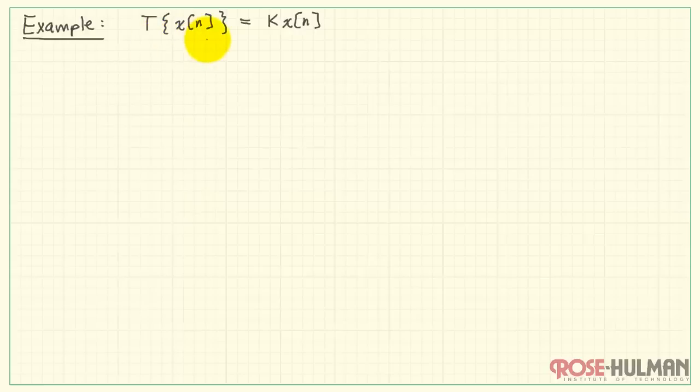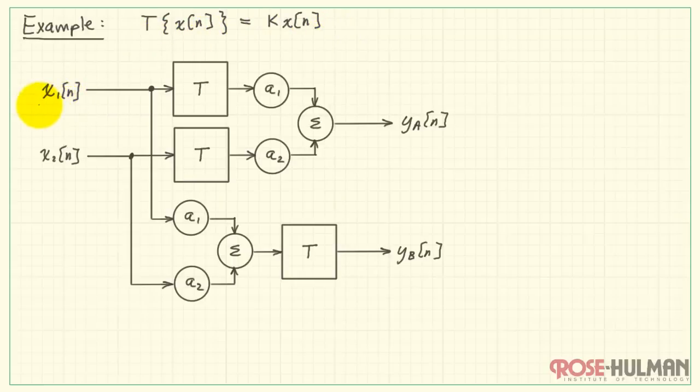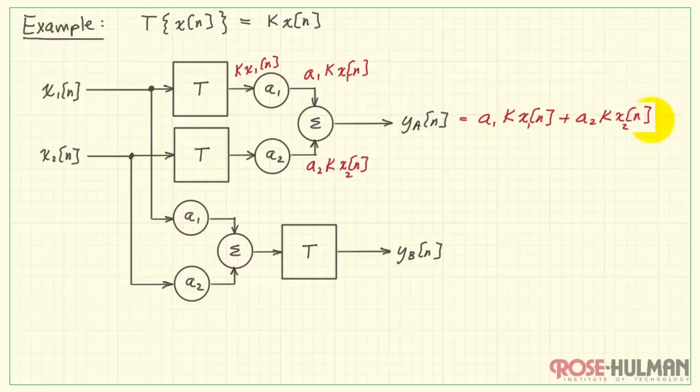Let's take a look at a specific example. I have a system T that operates on x of n this way. It multiplies x of n by the constant capital K. Flowing the first version of x through the top system and through the scale factor, and similarly for x2, gives me this result when I add them together.